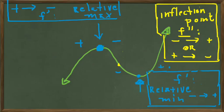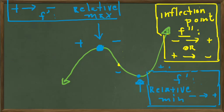So we now have all the information we need about what the first and second derivatives mean with respect to the shapes of a graph. In the next video, we're going to look at some functions, determine their first and second derivatives across all values of x, and then draw the graph of the function. Thank you.